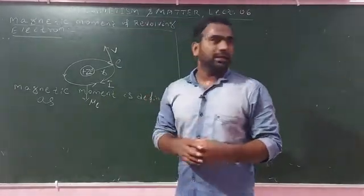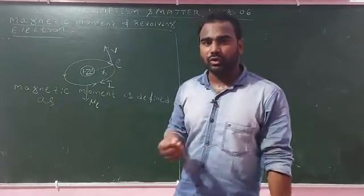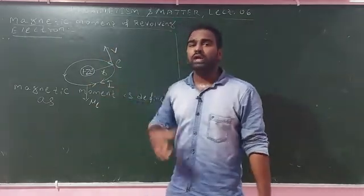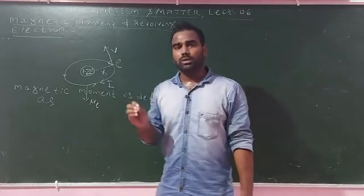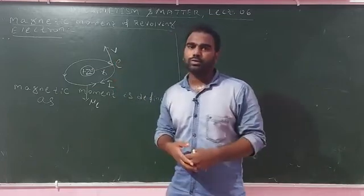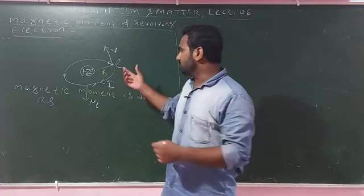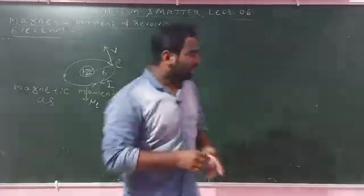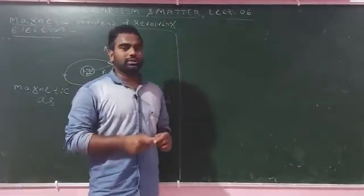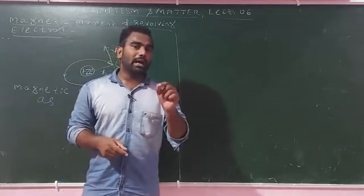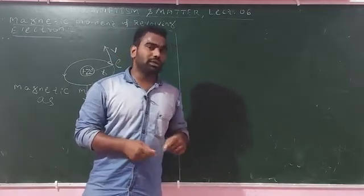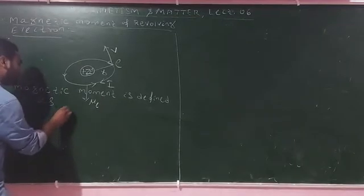The magnetic moment associated with an electron in an orbit is called the orbital magnetic moment. We normally express the magnetic moment using a formula. In lectures 1 and 2, we said that a current loop is magnetic. The current passing through a circular path produces the orbital magnetic moment.